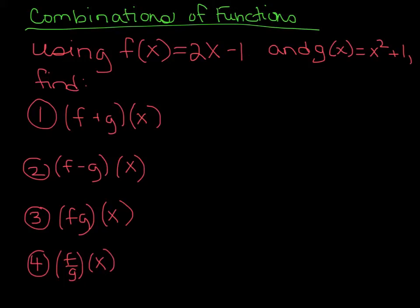We have f(x) = 2x - 1 and g(x) = x² + 1. We want to find a few things. The first thing is (f+g)(x). This is written in a way that looks really complicated and confusing. You can start by rewriting this as f(x) + g(x). These two things are the same thing.